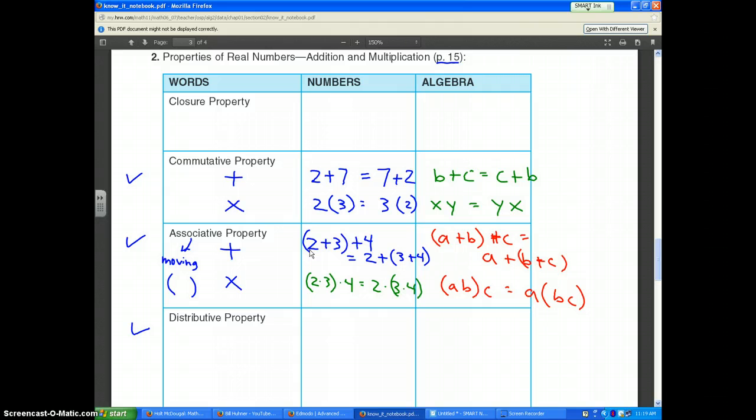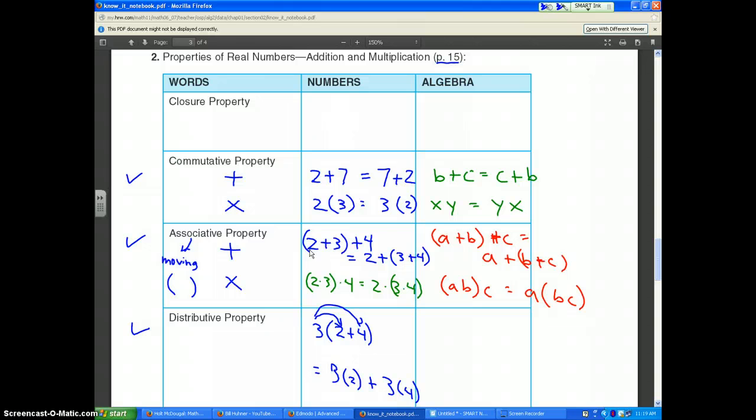The most important property, and the one you'll use the most, is the distributive property. We've all worked with the distributive property in the past. For instance, if I have 3 outside parentheses and 2 plus 4 inside the parentheses, that's the same as taking 3 times 2 and 3 times 4 and adding the results. So 3 times 2 plus 3 times 4.